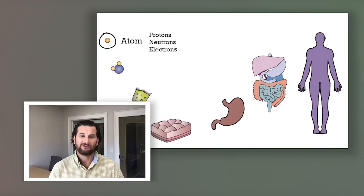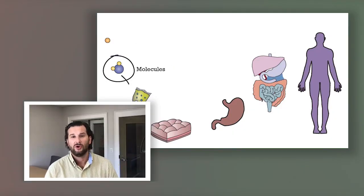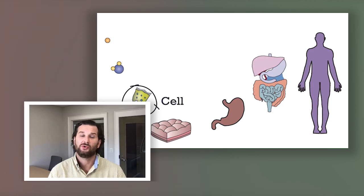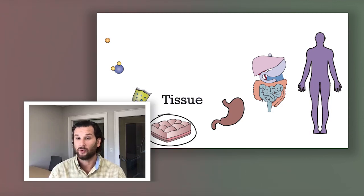With all that said, let's get right into it — there's quite a bit to cover. The first thing is the organization of the human body. Know the seven levels of organization: chemical, organelle, cell, tissue, organ, organ system, and organism.